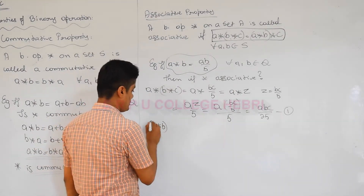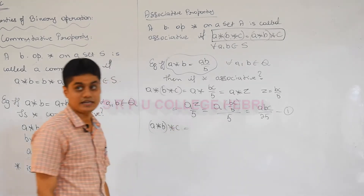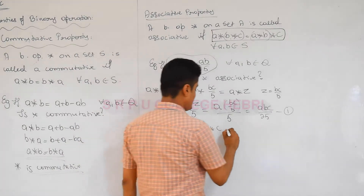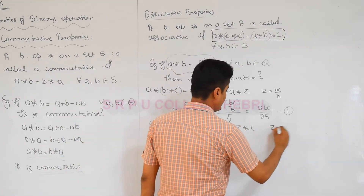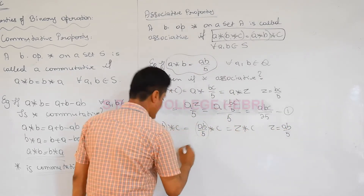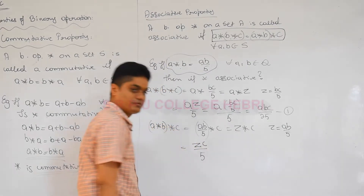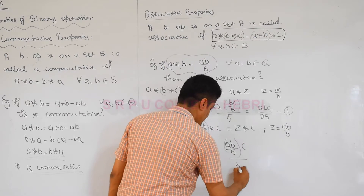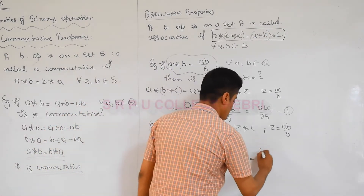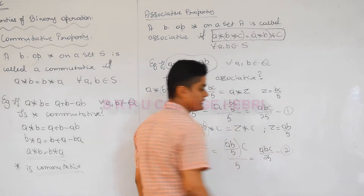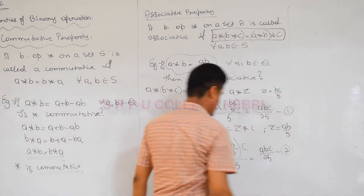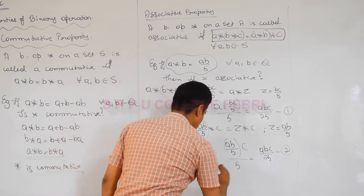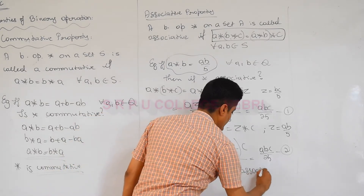Now find (A star B) star C. First, A star B equals AB by 5. Then (AB/5) star C gives (AB/5) times C divided by 5, which equals ABC by 25. Comparing the two results, A star (B star C) equals (A star B) star C. Therefore, star is associative.